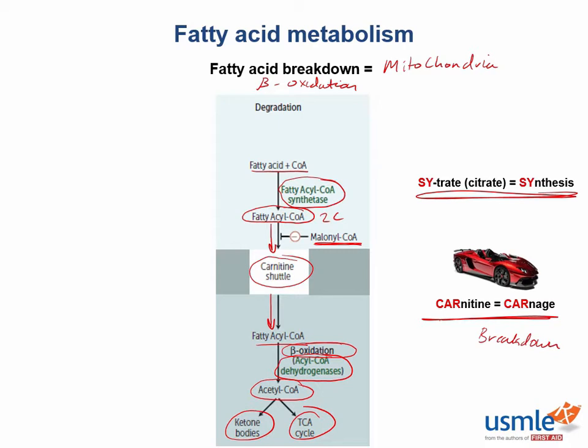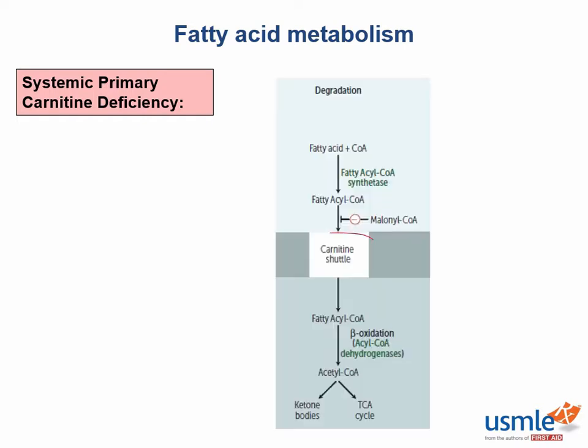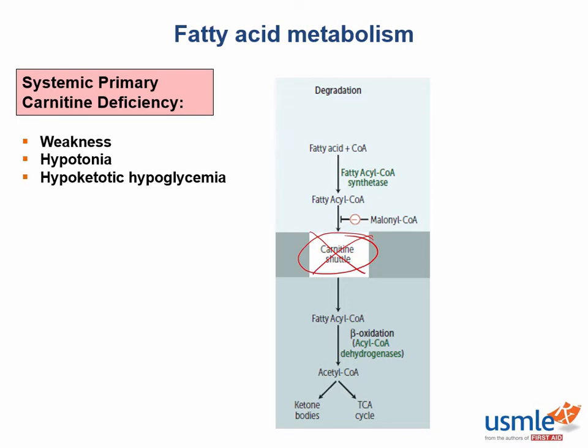When everything works correctly, our fatty acyl-CoAs use the carnitine shuttle to enter the mitochondria. In patients with systemic primary carnitine deficiency, there's an inherited defect in the carnitine shuttle. This prevents long-chain fatty acids from entering the mitochondria, which is required for their breakdown. These patients usually present with generalized weakness, hypotonia, as well as hypoketotic hypoglycemia.